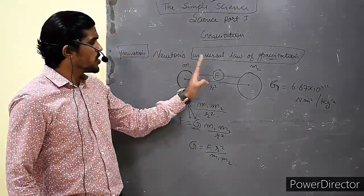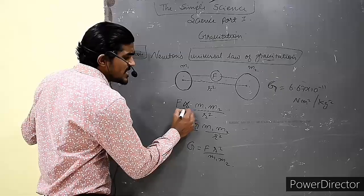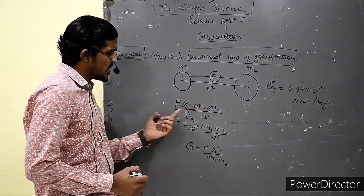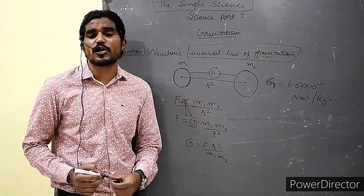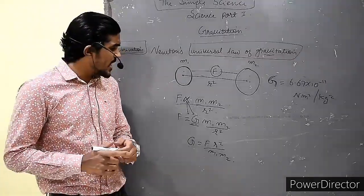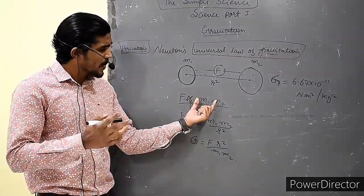Now see, according to Newton's law, the force is directly proportional to product of their masses and inversely proportional to square of the distance. This means that if masses are double, so force will also become double.